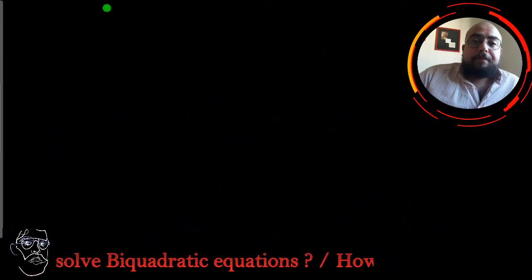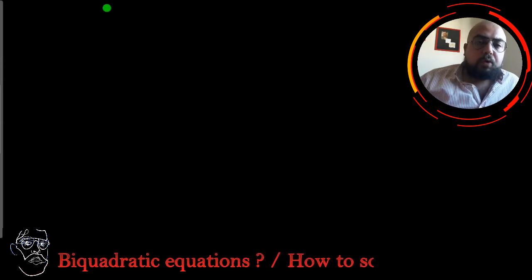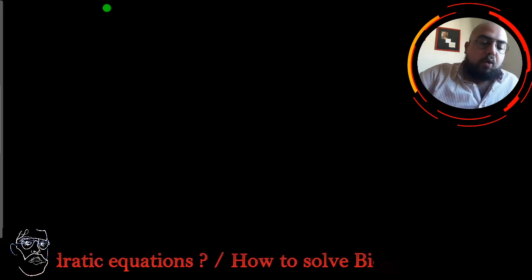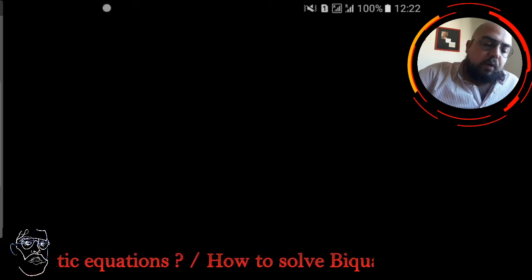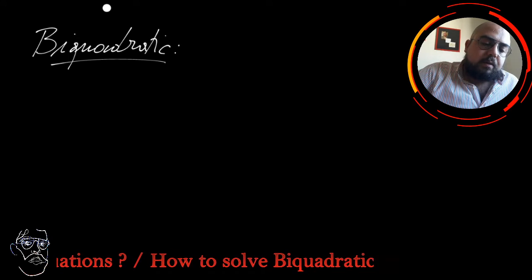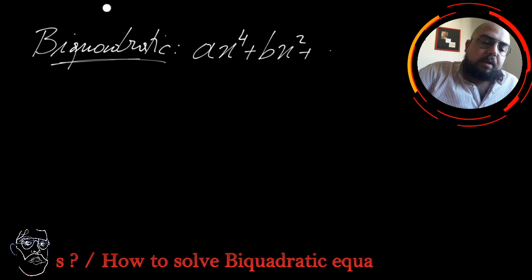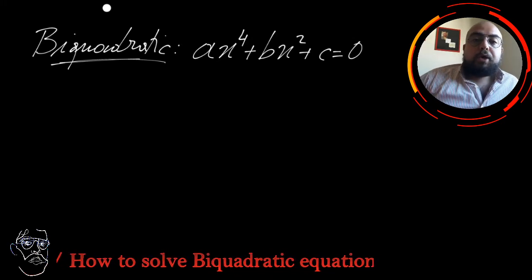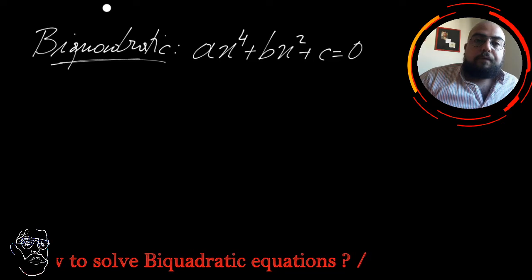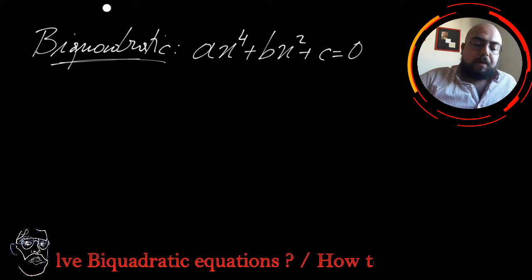Hello there, Noregis here. Today we're going to talk about a small part related to the quadratic equation, but we're mostly interested in this video about how to solve bi-quadratic equations. Bi-quadratic equations can be written as ax⁴ + bx² + c = 0, where the equation is from the fourth degree, and you should also note that the terms of the first and third degree do not appear.